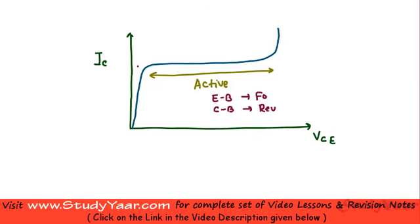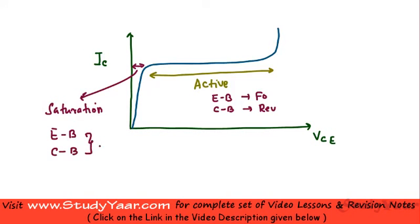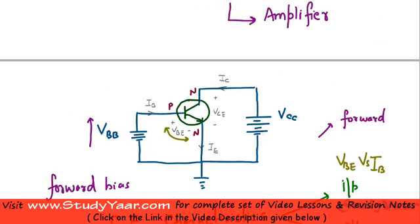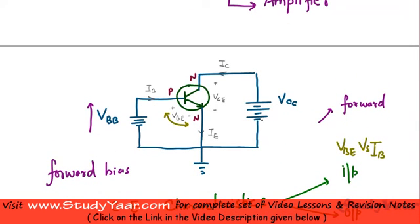This small region over here is known as your saturation region. In this particular region, your emitter-to-base as well as your collector-to-base are both in forward bias. And in this region you do have a reverse bias across your collector-base region, but as you increase the reverse bias — as you increase your VCE, which basically means you are adding more and more positive voltage over here.